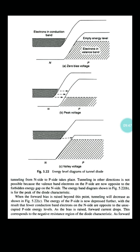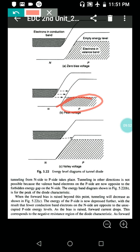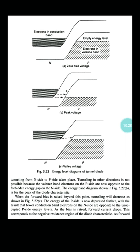Further increasing of the forward bias causes more recombination and collisions, and the shaded path increases again. When the shaded path increases, it creates some difficulty for the charge carriers. This causes the characteristics to slowly decrease. Tunneling from N side to P side is possible, but tunneling in the other direction is not possible because the valence band electrons on the P side are opposite to the forbidden energy gap on the N side. This is the operation explained by the energy band diagram.